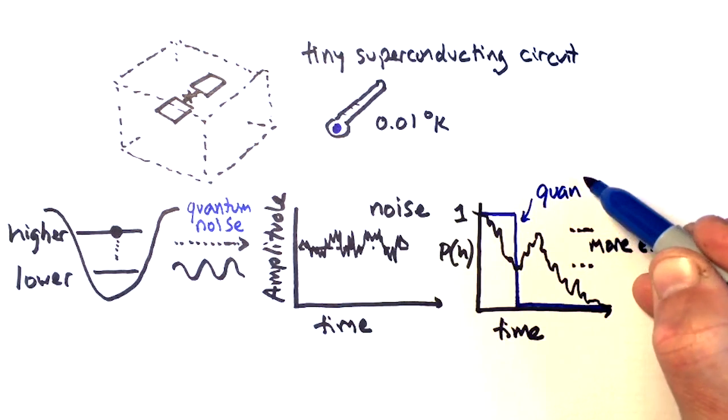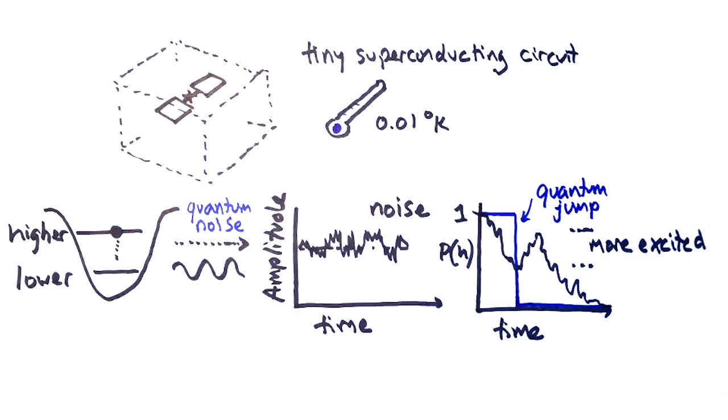So in one case we have quantum jumps, in the other case we have quantum diffusion, a very different type of dynamic for the quantum system.